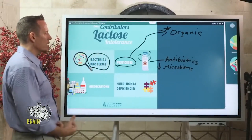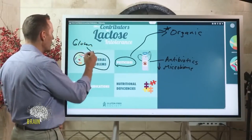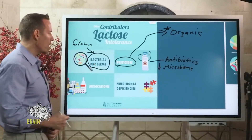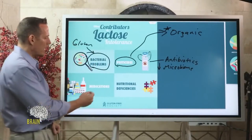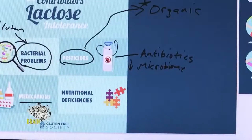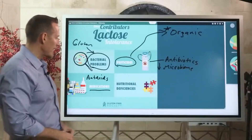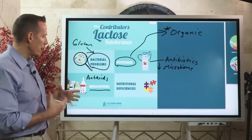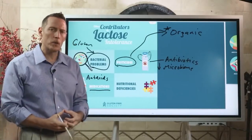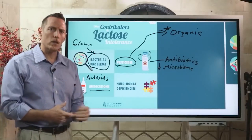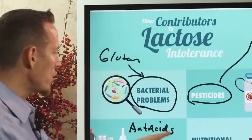Bacterial problems — whether infection, overgrowth, or dietary imbalances — also contribute. Gluten, for example, can create bacterial imbalance in the GI tract. Medications are another factor, particularly antibiotics. Antacids also hinder digestion: proton pump inhibitors and H2 antagonists reduce your body's ability to produce stomach acid, impairing digestion not just in the stomach but all the way through the digestive tract.